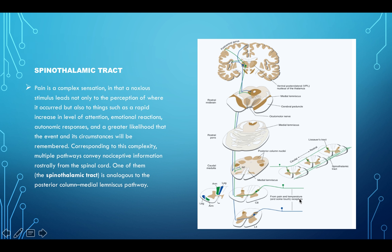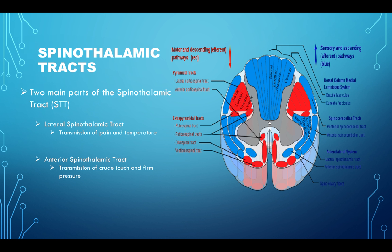Two main parts of the spinal thalamic tract: lateral and anterior. There are different areas of the spinal cord and body represented. The nociceptive signal from an unmyelinated C-fiber travels up through the peripheral nerve into the spinal cord, two to three segments later becoming the lateral spinothalamic tract. The reticular formation — a web-like distribution of neurons spanning the mesencephalon, pons, and medulla — increases brain awareness and alertness. The signal travels through the thalamus and VPL, producing a limbic emotional response, hypothalamic stress and autonomic responses, and parietal lobe localization of the body part.